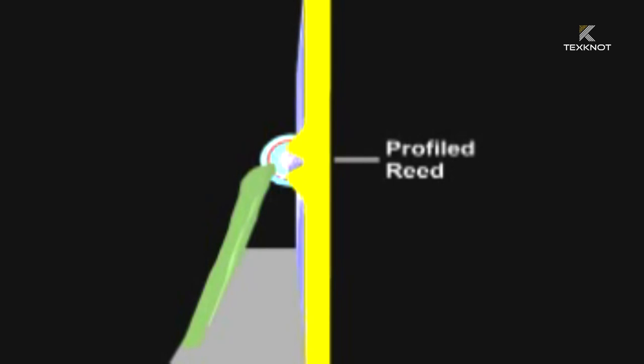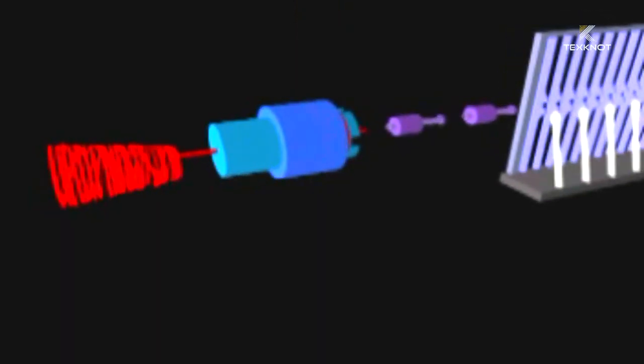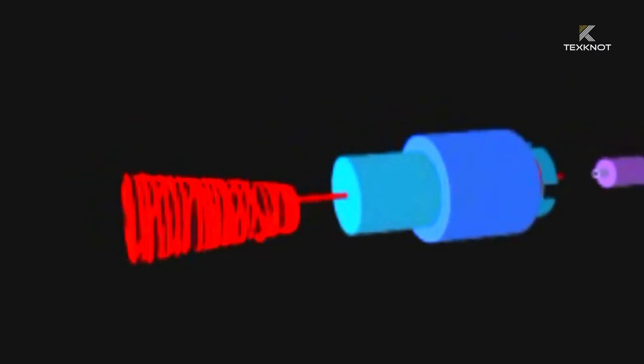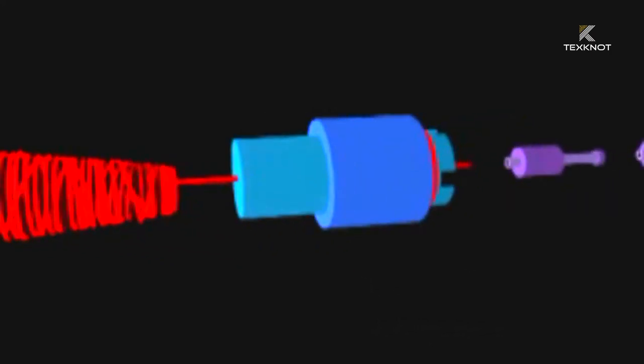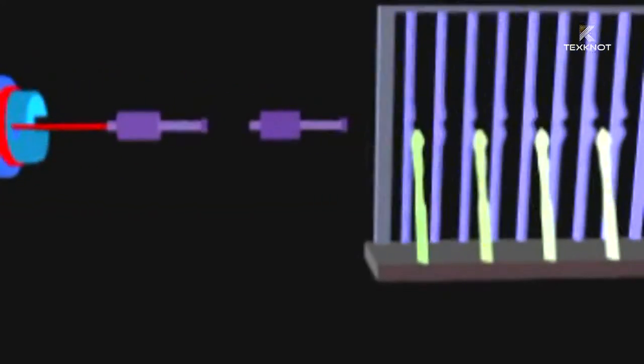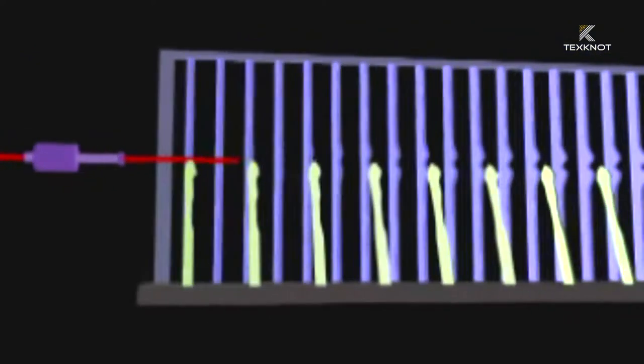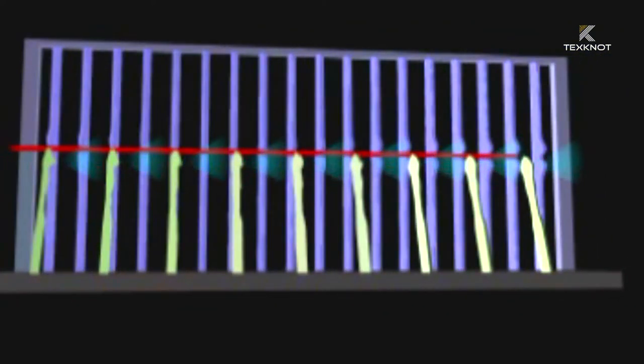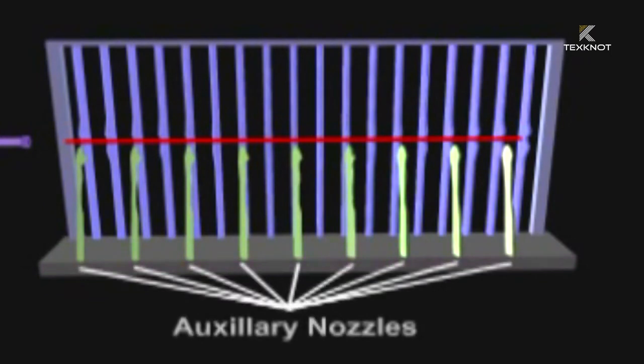Air jet looms require very expensive profiled reeds to channel the air and yarn across the shed. Air jet weaving inserts the filling from an off-loom auxiliary supply system that accumulates the exact amount of yarn needed to travel across the shed. An initial burst of air starts the yarn on its way and several auxiliary nozzles then help propel the yarn completely across the warp. These auxiliary nozzles are evenly spaced and fit into the tunneled or profiled section of the reed.